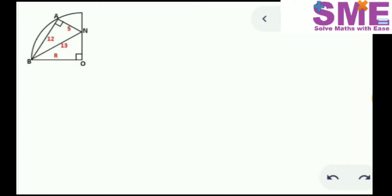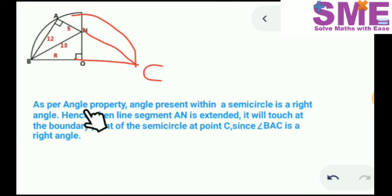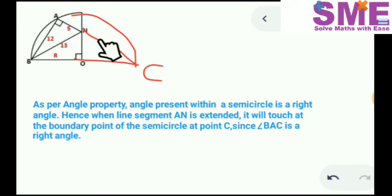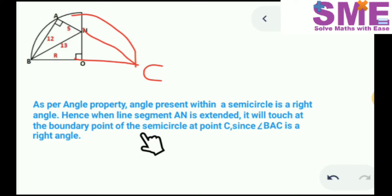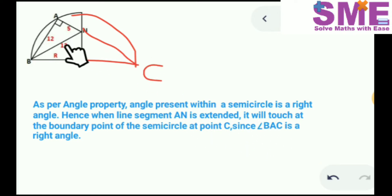Now we will expand this quarter circle to form a full semicircle, and extend line segment AN to meet the boundary at point C. As per the angle property, we know that the angle present within a semicircle is a right angle, so angle BAC is a right angle.